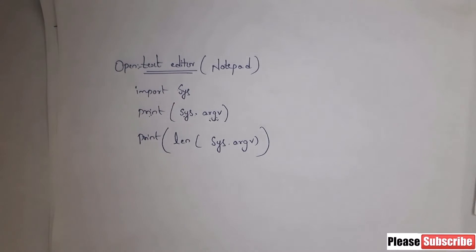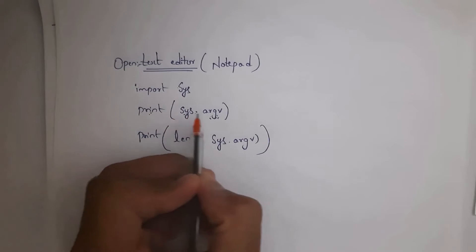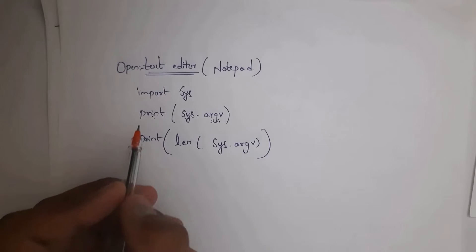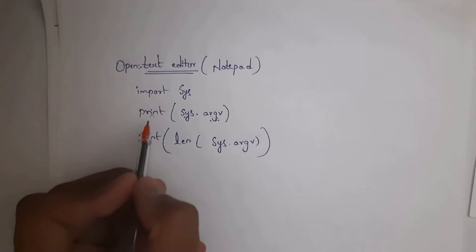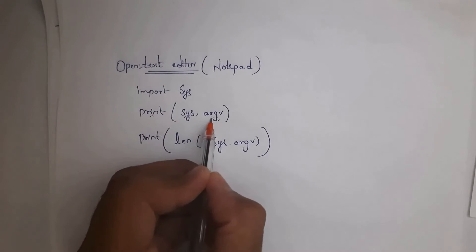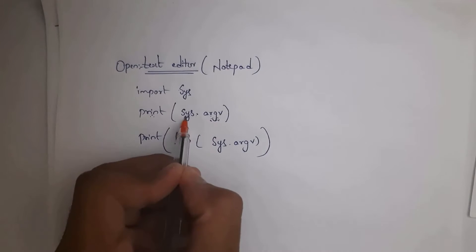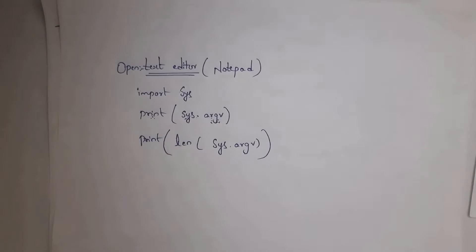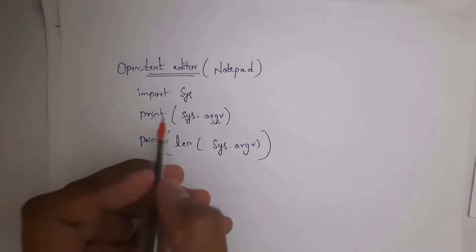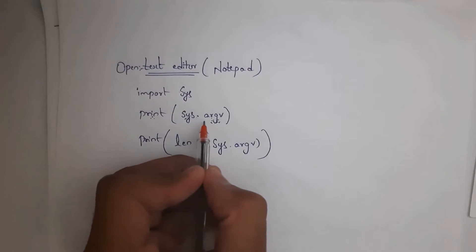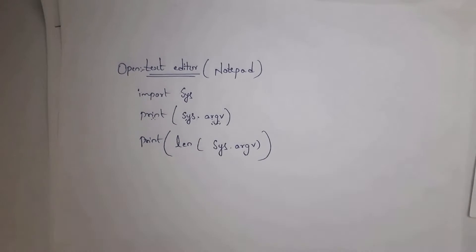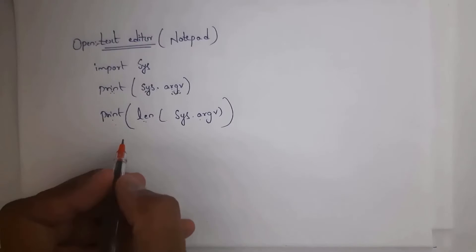After writing 'import sys', then write 'print sys.argv'. If you directly write 'print sys.argv' without importing, it will display an error. So definitely write 'import sys' first, then 'print sys.argv'. Here, argv stands for argument vector. Whatever input you give on the command prompt, sys.argv will display all those inputs, including the file name.